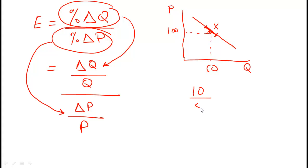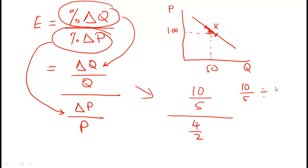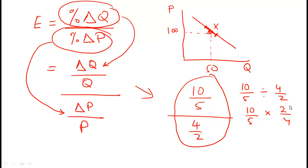Using basic fraction arithmetic — for example, (10/5) divided by (4/2) — when you have one fraction divided by another, you flip the second fraction and multiply: (10/5) × (2/4). This converts the ugly fraction-over-fraction into a cleaner form.